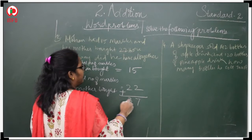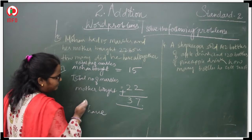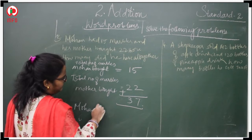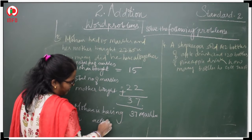Total together, he has in total, or we can say Mohan is having 37 marbles all together. Okay? Next.